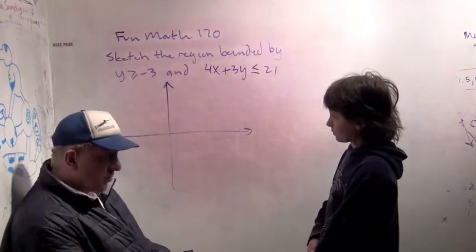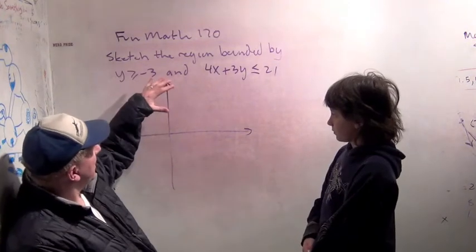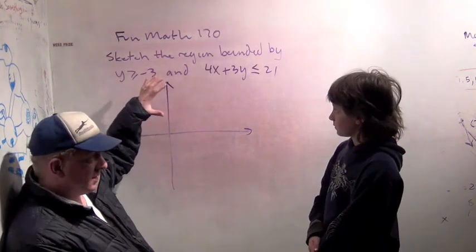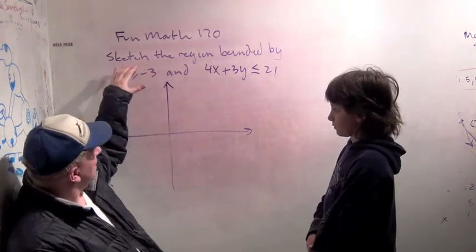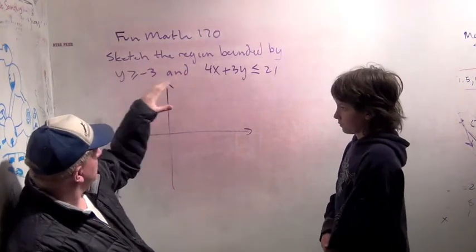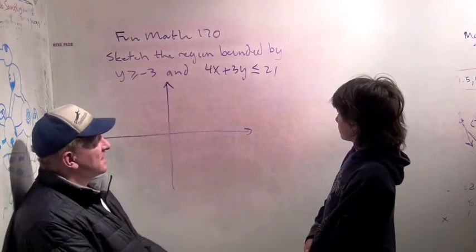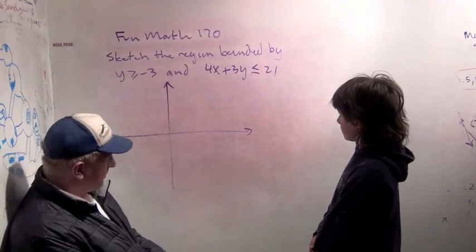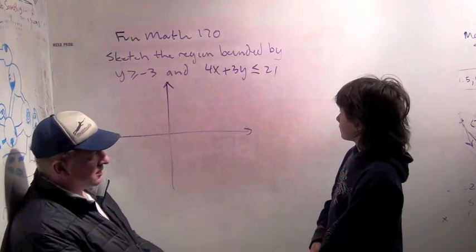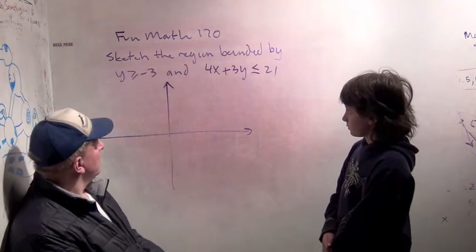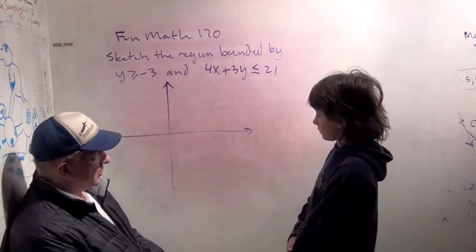We're going to do part of a problem today we did in section 9.5 of our Problem Solving's Algebra book. And what we're going to do is sketch the region bounded by y is greater than -3 and 4x plus 3y is less than or equal to 21. We're going to try to go through this quickly and a little intuitively. There's going to be three steps to this.